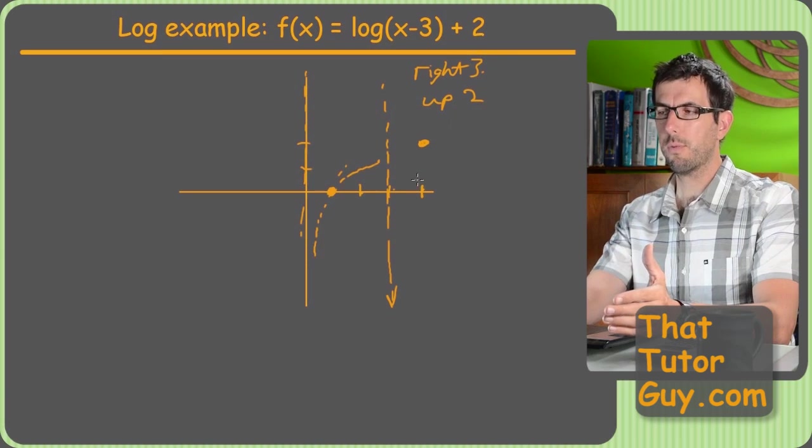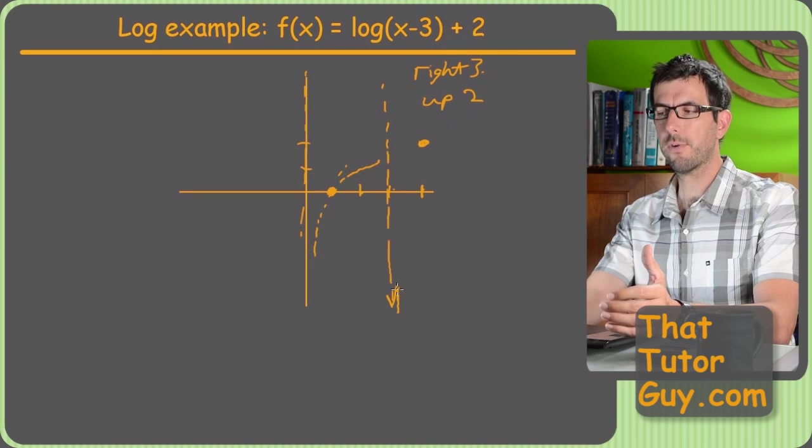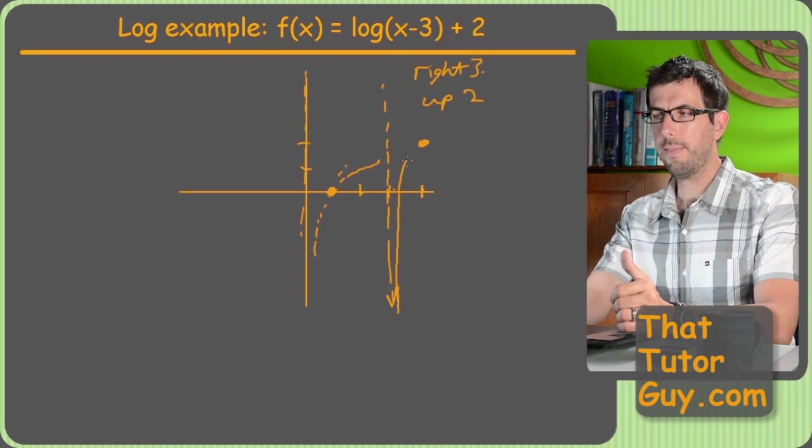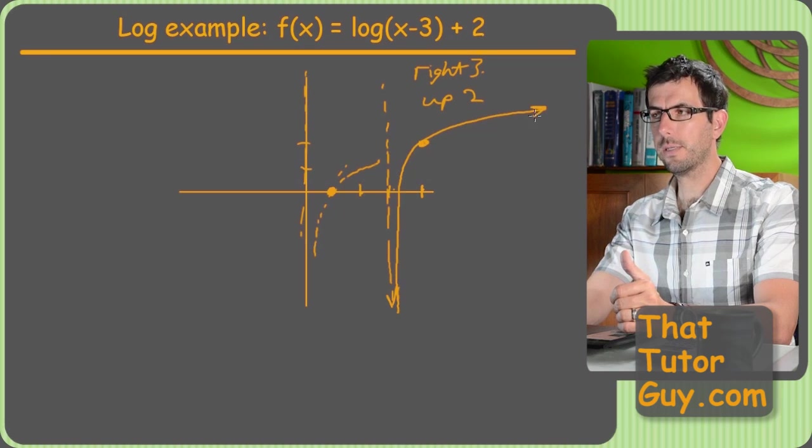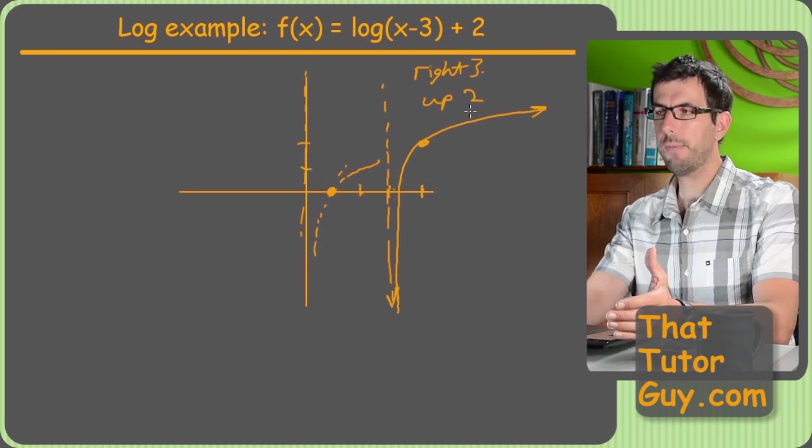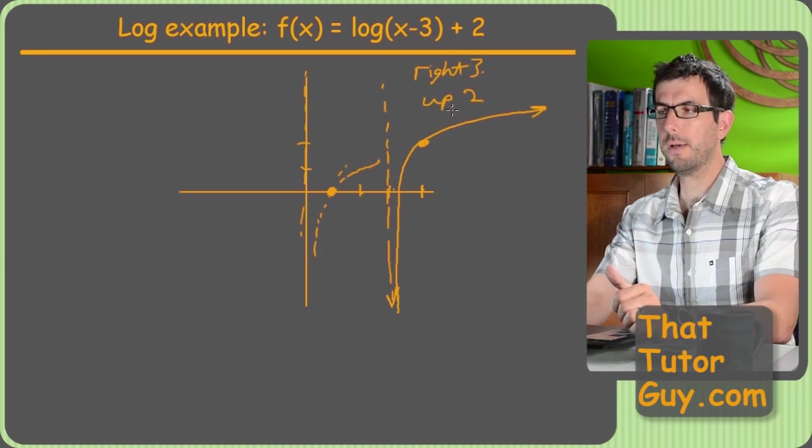Now, you might be confused what I would do with that key point. Well, logs always shoot up along their vertical asymptote, and then they kick through the key point and turn sideways. So there you go. That must be the graph. There's no flips or anything to worry about.